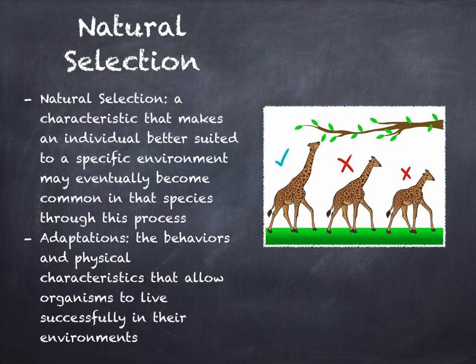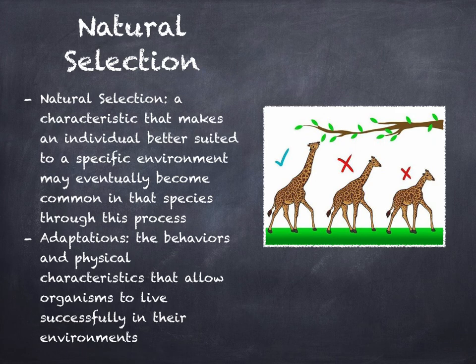Adaptations are the behavior and physical characteristics that allow organisms to live successfully in their environments. For example, the arctic hare has fur that turns from gray to white in the winter, which helps camouflage the hare against the snow. Individuals with characteristics poorly suited to a particular environment are less likely to survive and reproduce. Over time, poorly suited characteristics may disappear from the species.